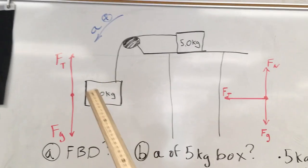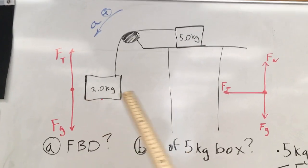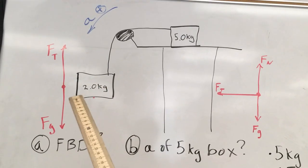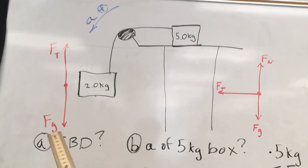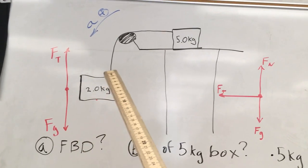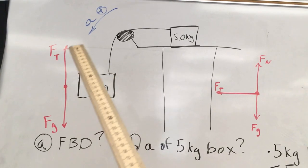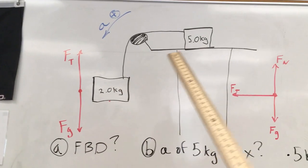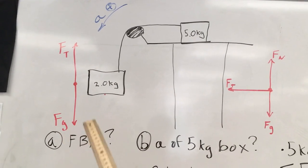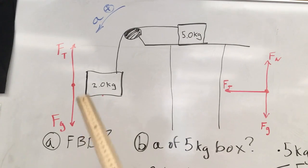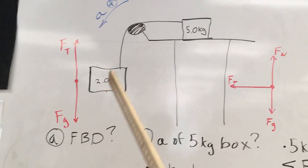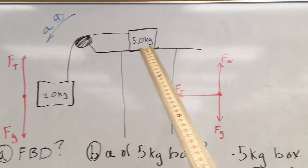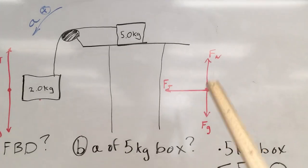For the free body diagram of the two kilogram block, it's pretty simple — it's in the air so there's no table to support it. Gravity will be pulling it down, that's Fg. Meanwhile, the force due to tension in the rope will be holding it up. Since the system is accelerating, the gravity vector should be drawn a little bit longer to emphasize there is a net force in the downward direction.